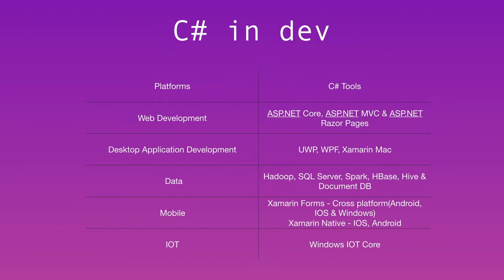For desktop application development, I will go for Java because using Java you can write cross-platform applications for Windows, Mac, and Linux. In mobile, I would not go for Java because C# has both cross-platform and native application development options.